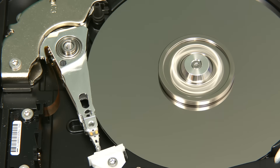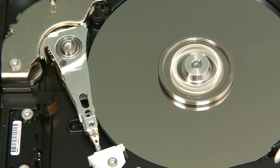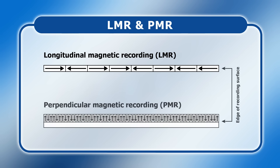We've just seen how areal density can be increased by shifting from a CMR to an SMR track layout. However, areal density can also be increased by using a different recording technology to write data to the surface of the platter. Early hard drives used longitudinal magnetic recording or LMR, which wrote bits of data along the surface of the track, a bit like bar magnets lying end to end. In the 2000s a transition was made to perpendicular magnetic recording or PMR, where bits of data are written perpendicular to the disk surface like bar magnets stacked vertically. This saves space and reduces magnetic interference between bits, allowing for increases in BPI and in turn areal density. However, even PMR has its limits, which is why the highest capacity hard drives now rely on newer recording technologies.